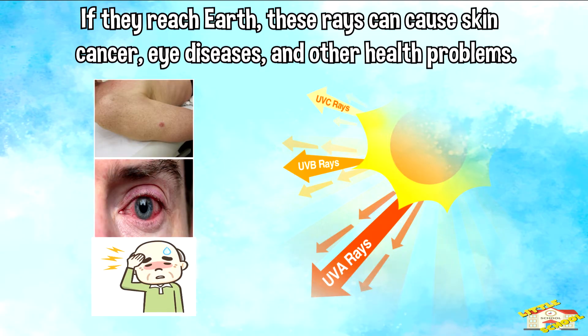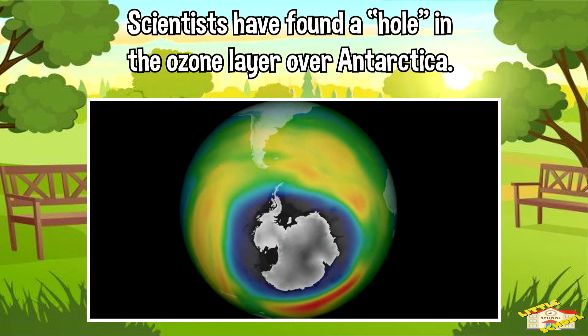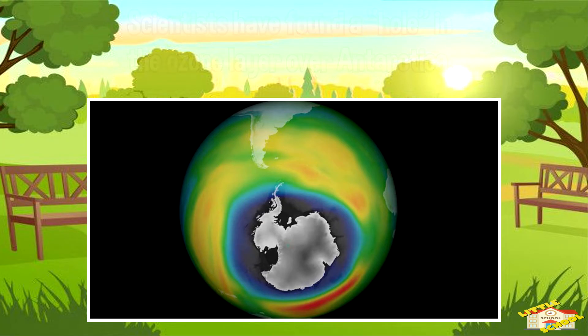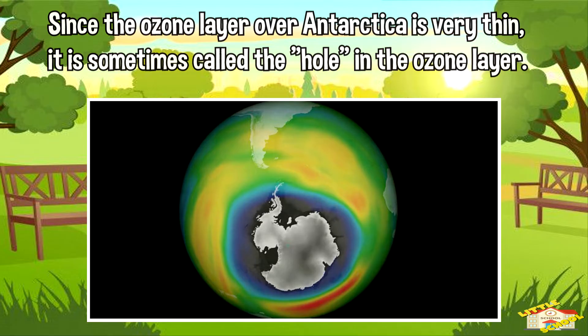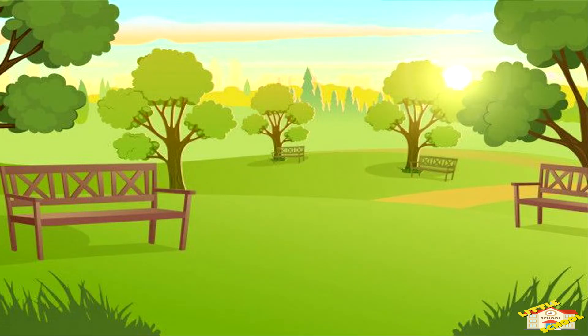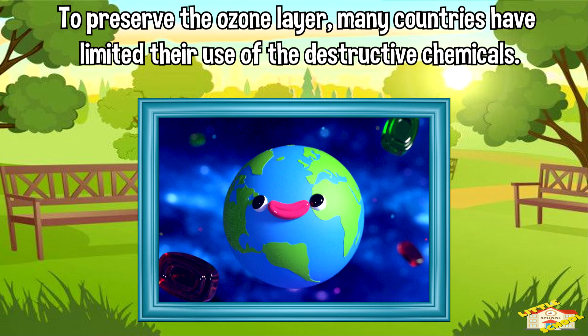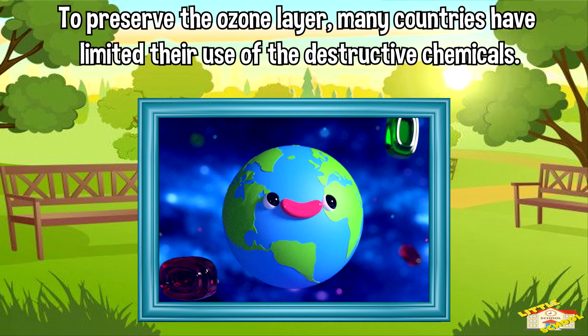Scientists have found a hole in the ozone layer over Antarctica. Since the ozone layer over Antarctica is very thin, it is sometimes called the hole in the ozone layer. To preserve the ozone layer, many countries have limited their use of destructive chemicals.